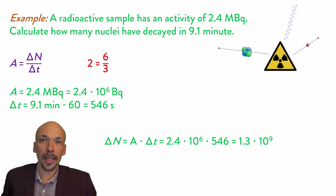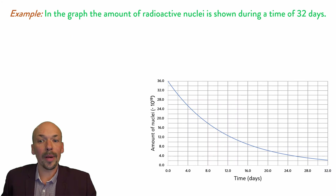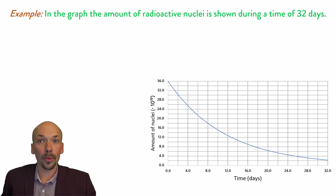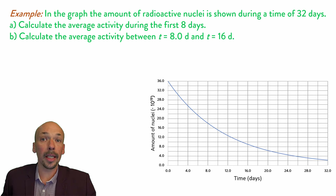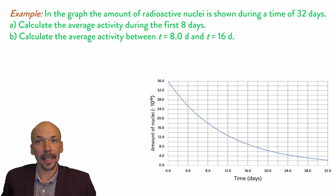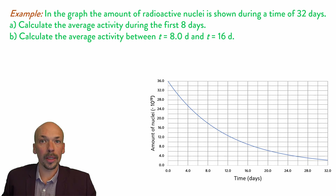Now we will go to the next question. In the graph, the amount of radioactive nuclei is shown during a time of 32 days. Part a: calculate the average activity during the first 8 days. Part b: calculate the average activity between 8 and 16 days. Try this for yourself and pause the video now.